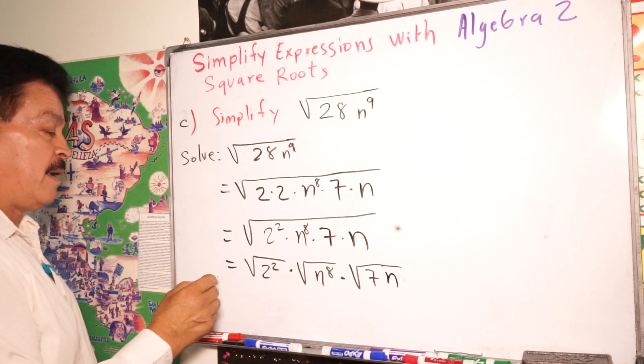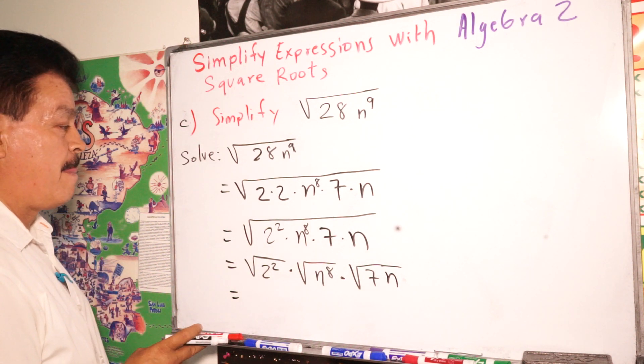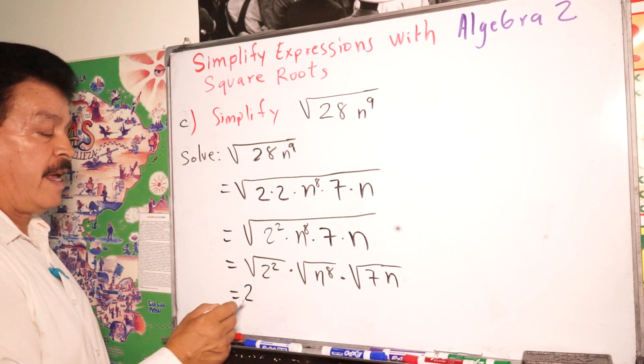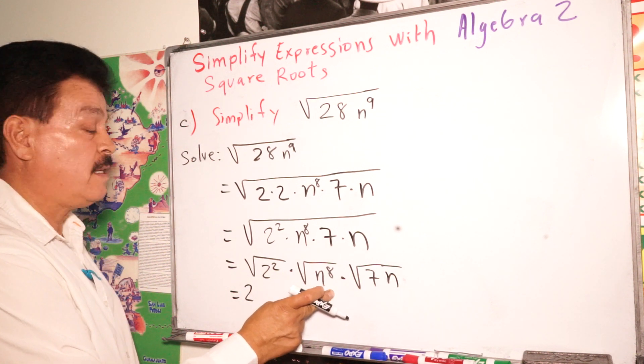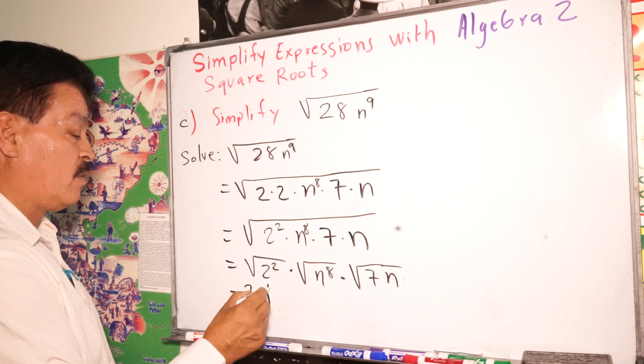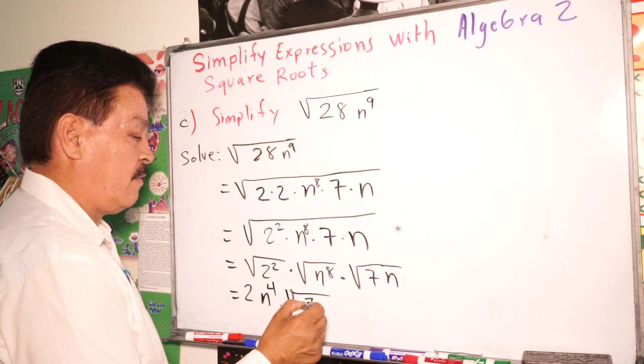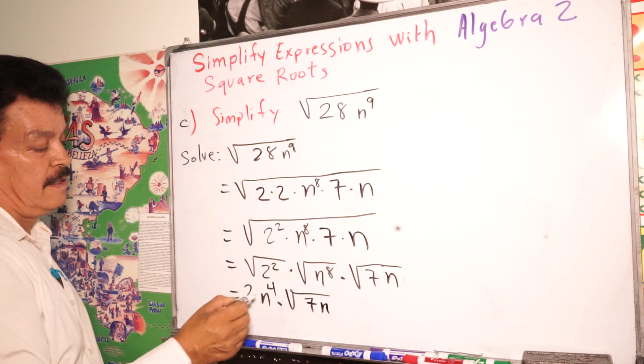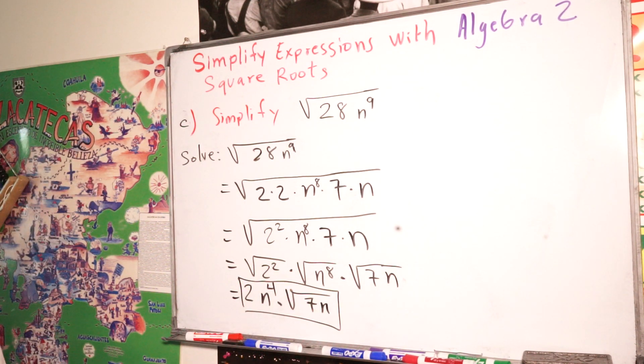Now the last step, this is 4 here. So will be 2 to the, also this one, you simplify n to the 4th power times square root of n to the 1st power. This is our answer. This is the way to simplify especially with the square root.